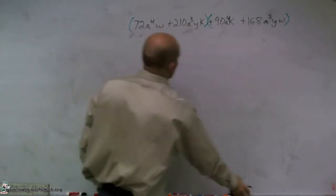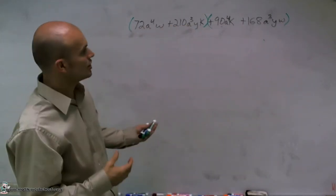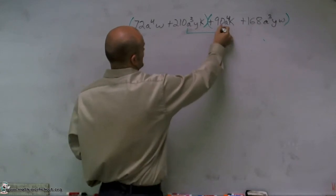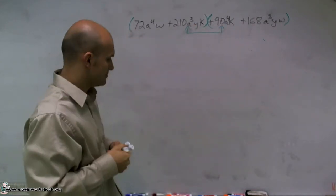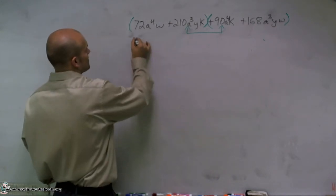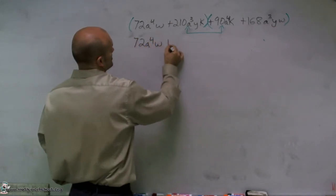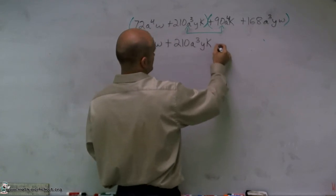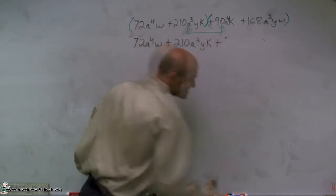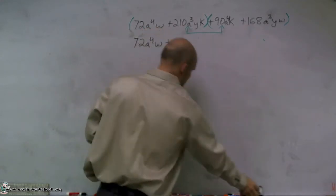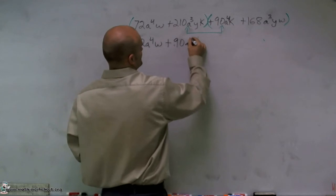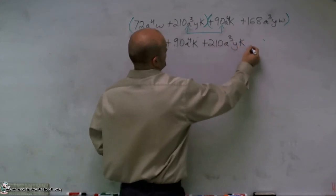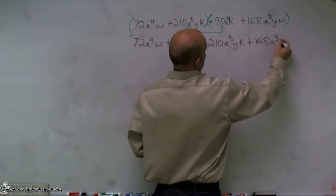So what we're going to do is think about what are ways I can rearrange these terms so that I can factor them out together. And what I do is a quick, easy way to do it is just interchange your middle terms. So now when I write my equation out, I have 72a^4w plus 90a^4k plus 210a^3yk plus 168a^3yw.